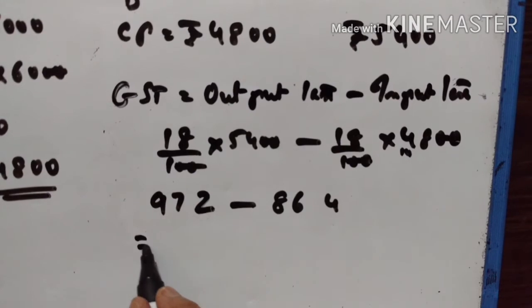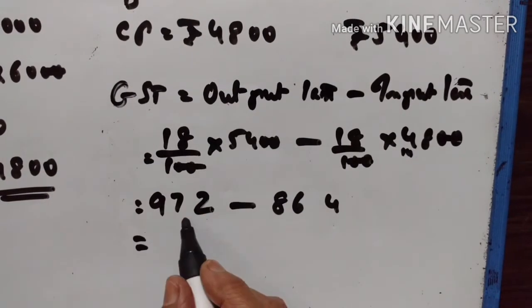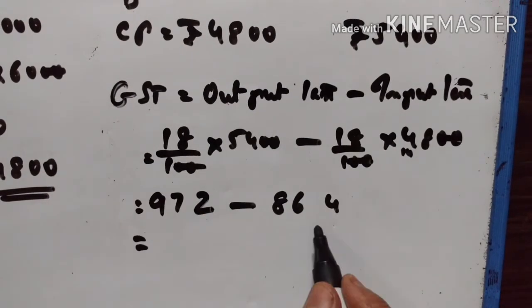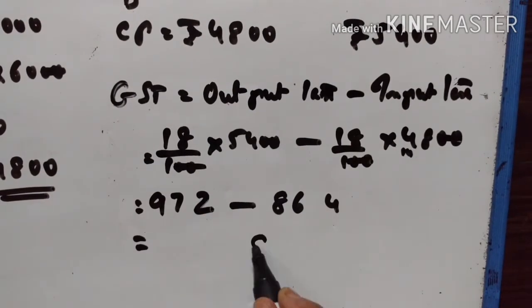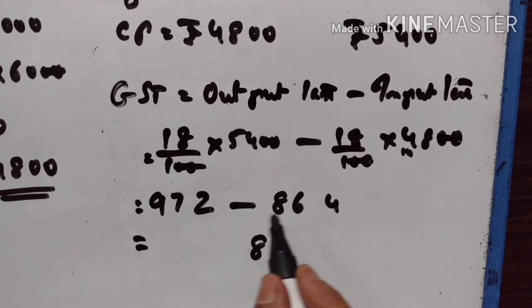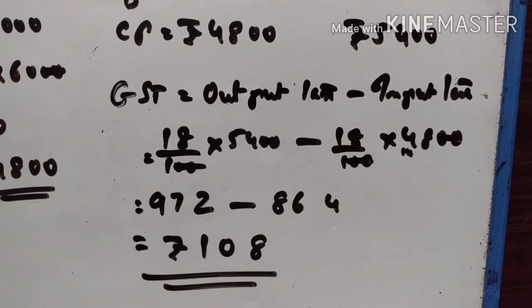So GST paid by the dealer is equal to Rs.972 minus Rs.864, which is Rs.108.